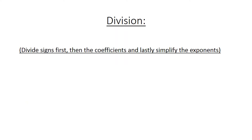Division: divide signs first, then the coefficient, and lastly simplify exponents. 32abc divided by 8b: a positive divided by a positive is a positive. 32 divided by 8 equals 4, and abc divided by b equals ac. So the answer is 4ac.